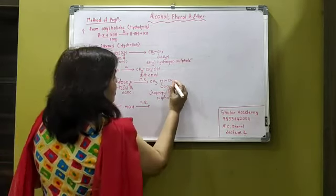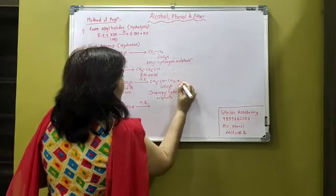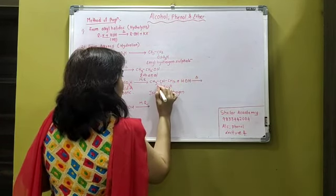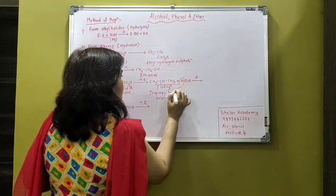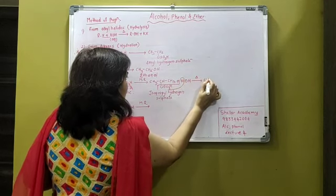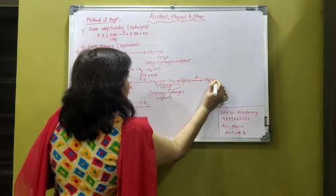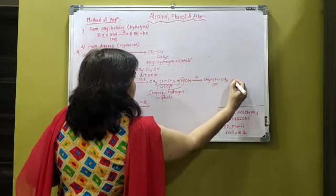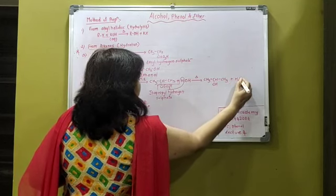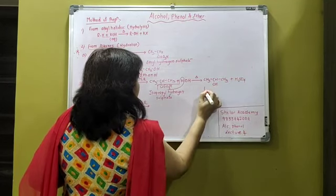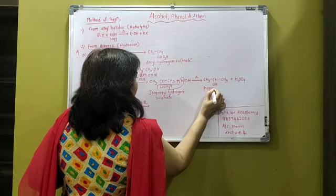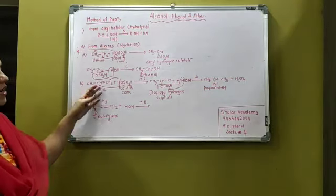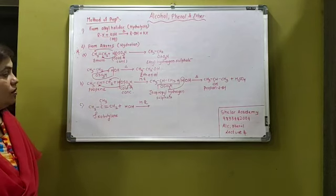The next step, it will undergo the reaction with water, warm water. What is the product? CH3-CH(OH)-CH3, and then sulfuric acid is regenerated. What is it? This is propan-2-ol. I got a secondary alcohol.